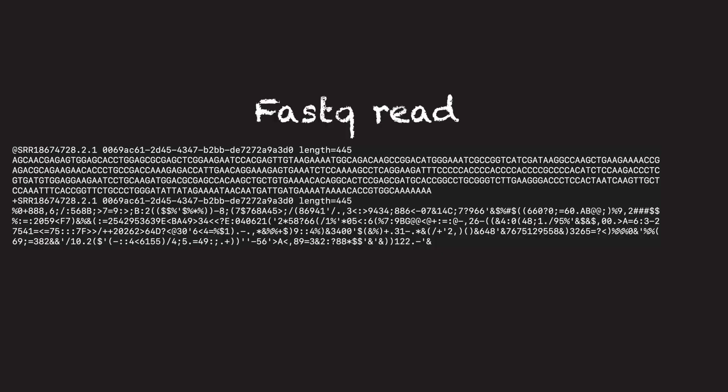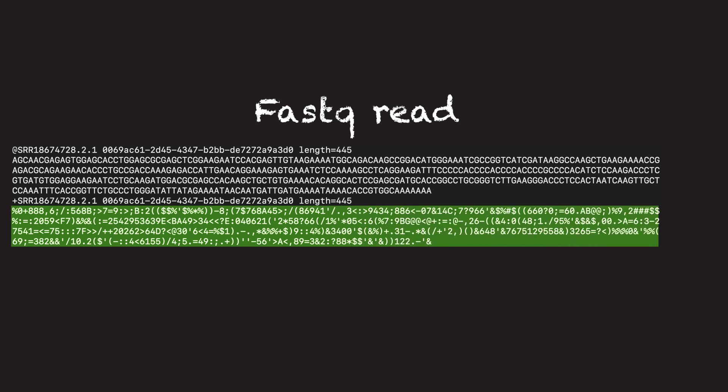Each read is written in four lines. The first one, starting with the '@' symbol, is the name of the read. The second is the sequence itself. The third is a '+' sign, typically followed by the sequence name again. And the fourth contains the quality scores for each base, each symbol representing a different score. One of the most common tasks performed on FASTQ files is the mapping of the sequences — essentially figuring out where in the genome these sequences are coming from.